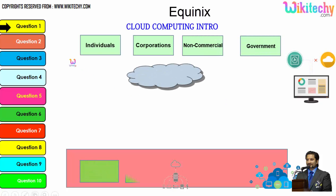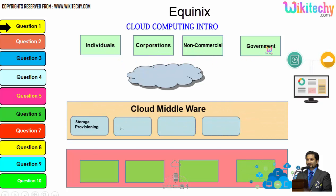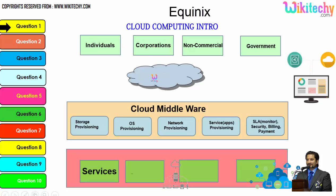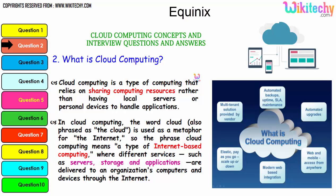There are different types of users: individuals, corporations, non-commercial people, and government. From any of these users, they are able to access services, storage, networks, or operating systems via cloud middlewares. These are specialized software provided by the cloud service provider to allow end users to access the resources. This is how the cloud computing architecture works.